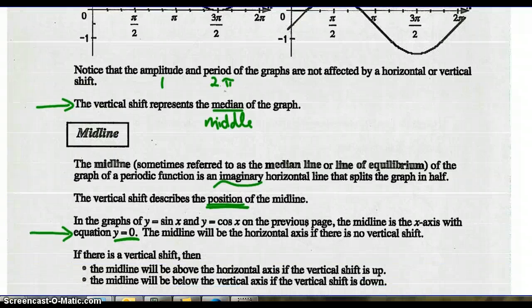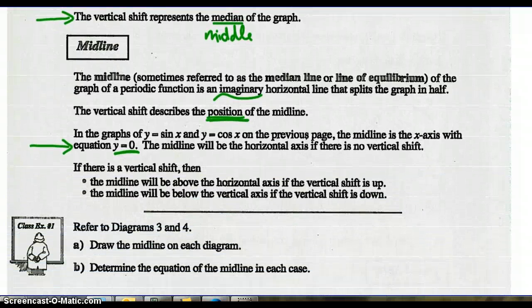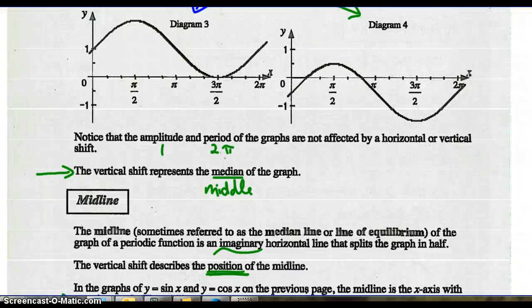If there's no vertical shift, the midline is the x-axis, equation y equals 0. If there is a vertical shift, the midline will be above the horizontal axis if the shift is up, and below if the shift is down. For diagrams 3 and 4, draw the midline for each graph and determine the equation.